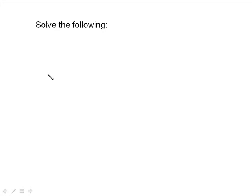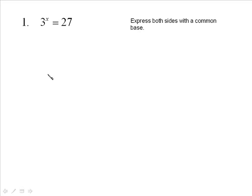Take a look at the simplest of simple equations. If you have 3 to the x is equal to 27, the unknown x is in the exponent. You can see the answer is 3 to the exponent of 3 is equal to 27. The method is the same in all cases — when the unknown is in the exponent, you try to express both sides with a common base. In this case, they can both be brought down to a base of 3.